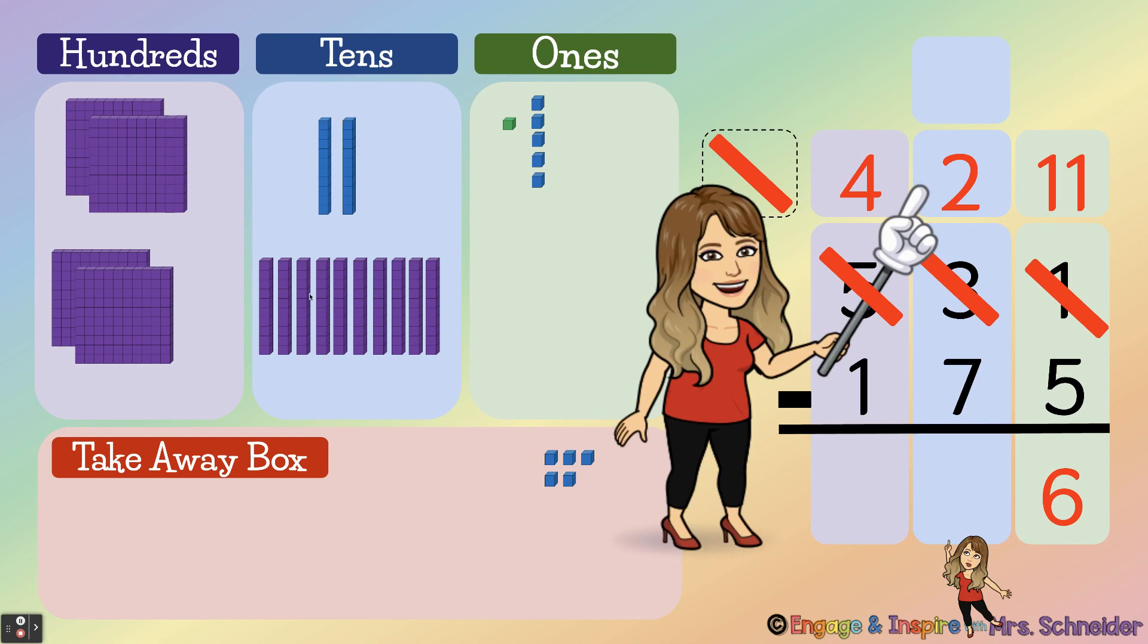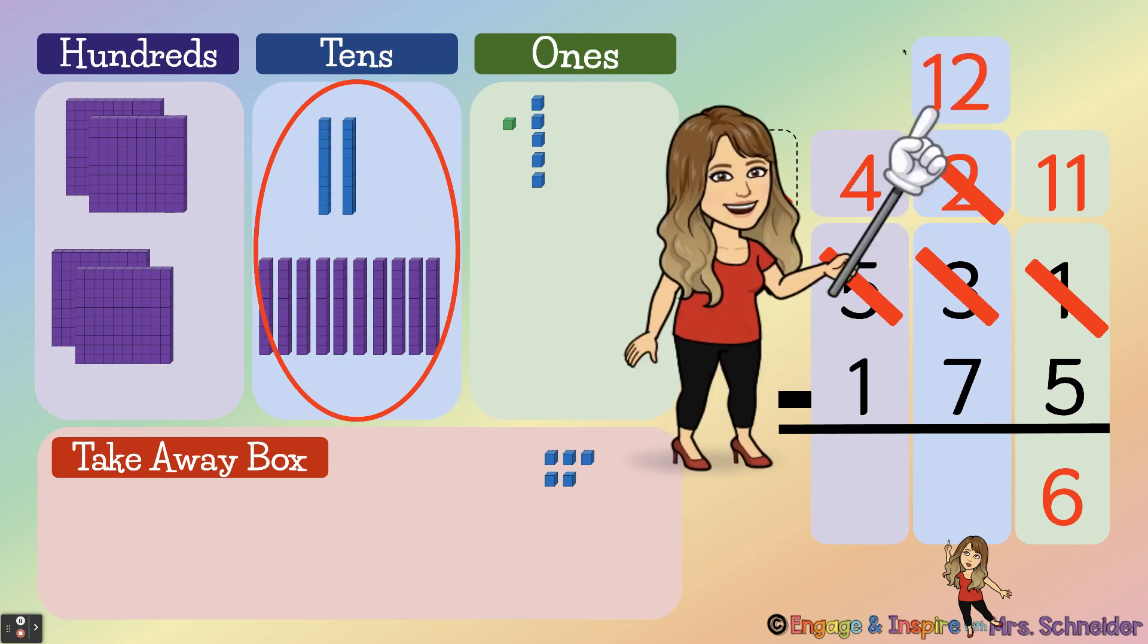Okay, and now I need to fix my tens because I don't have just two tens anymore. So I'm going to cross out that two and I'm going to change it to ten plus two, which is twelve.